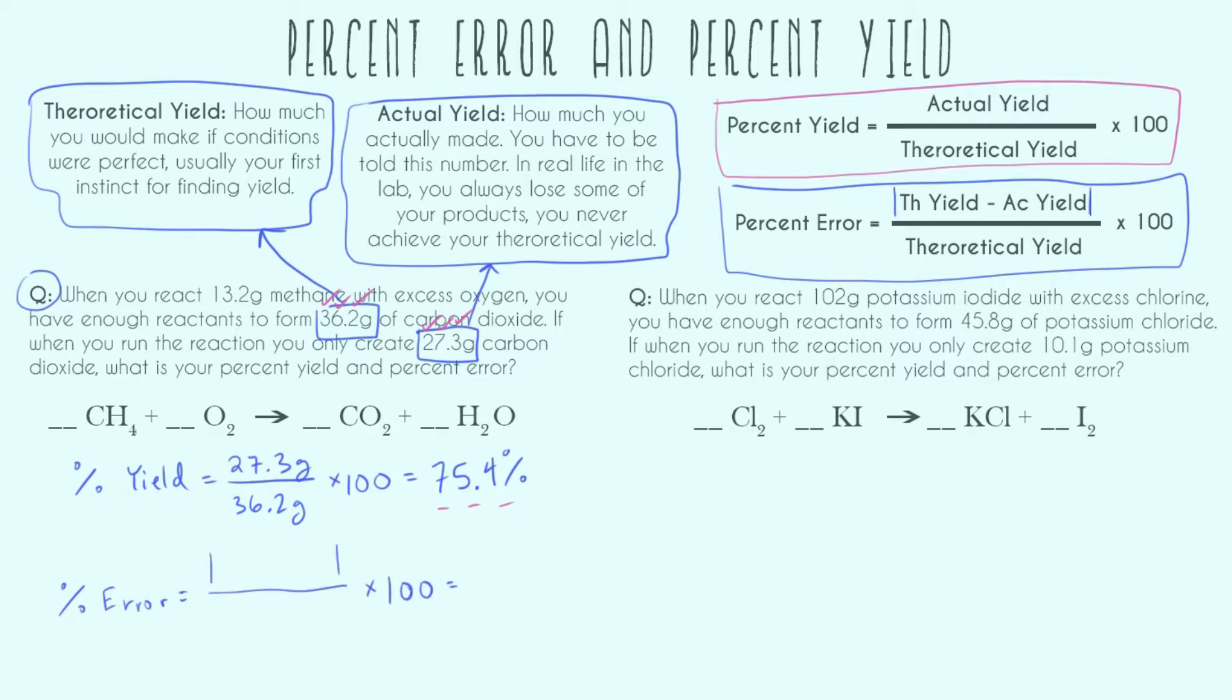So now going ahead and doing percent error. Absolute value, which just means our numerator can't be negative, it has to be positive, of a theoretical yield minus our actual yield, all over our theoretical yield. And we're going to go ahead and get that and then multiply by 100. With 3 sig figs, we get 24.6 percent was our percent error.